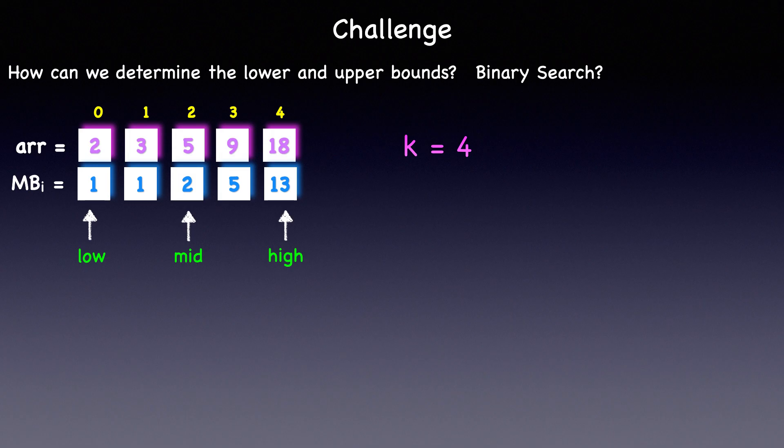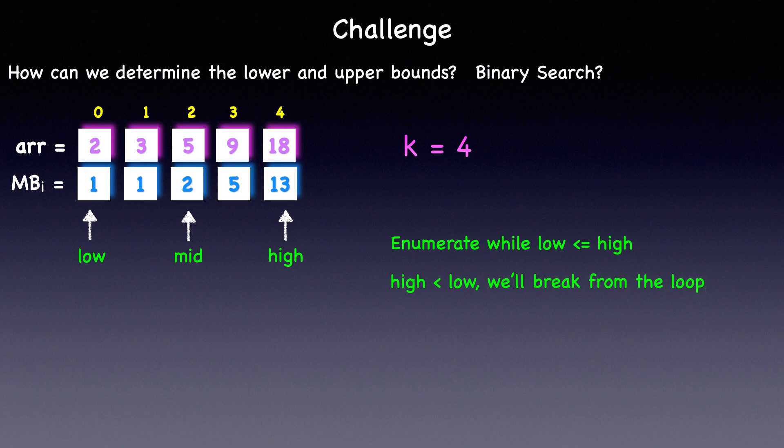And that is the key difference. If the count of missing numbers missing before mid is less than k, we'll search on the right side of mid, otherwise we'll search on the left side. We'll enumerate while low is less than equal to high, and once they cross over, meaning when high is less than low, we'll break from the loop. Since high and low have crossed over, high will be the lower bound index and low will be the upper bound index. And then we can apply the formula from the previous slide to get the kth missing number.